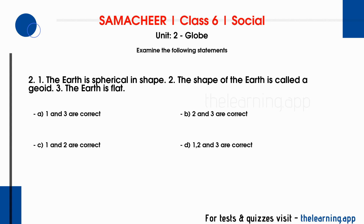Question 2: Statement 1 — The Earth is spherical in shape. Statement 2 — The shape of the Earth is called a geoid. Statement 3 — The Earth is flat. Options are A. 1 and 3 are correct. B. 2 and 3 are correct. C. 1 and 2 are correct. D. 1, 2 and 3 are correct. Correct answer is C. 1 and 2 are correct.